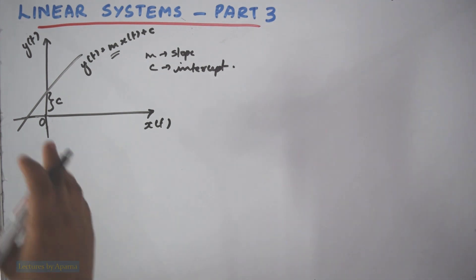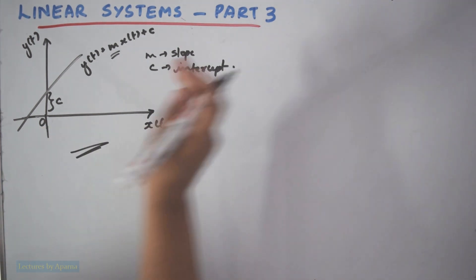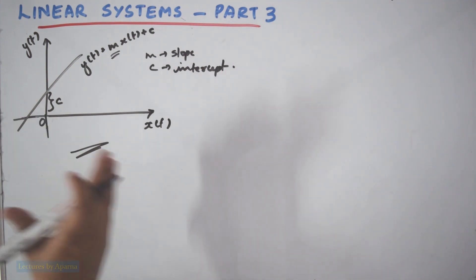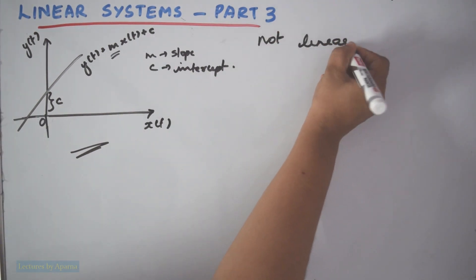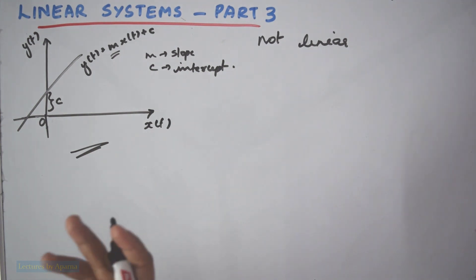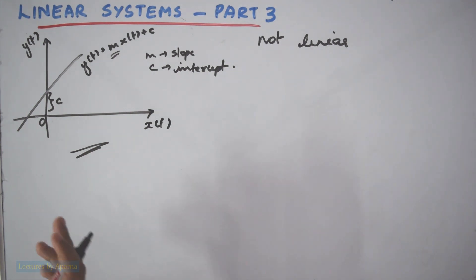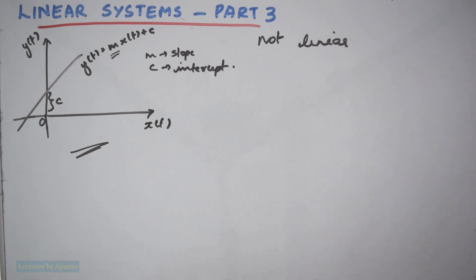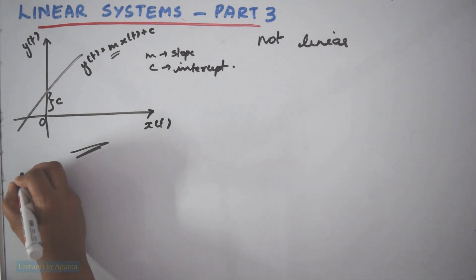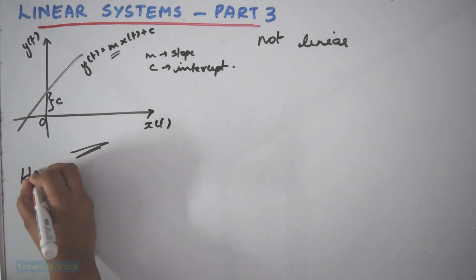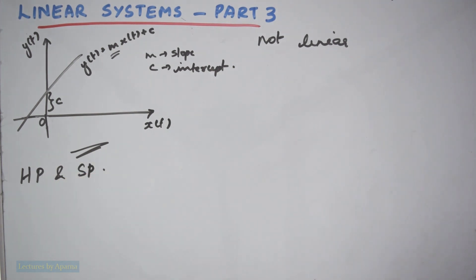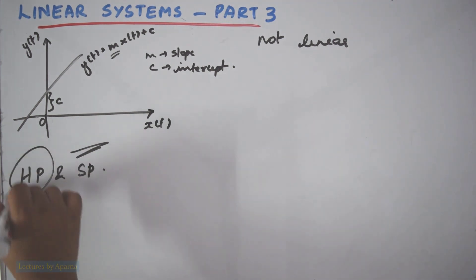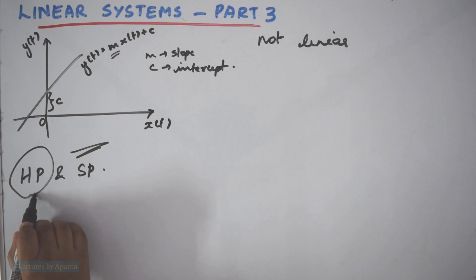But in actual fact, a system which is related like this is not linear. So let's see why this system is not considered as linear. To be linear, it should satisfy the homogeneity property and the superposition property. So let's see if the homogeneity property is satisfied.